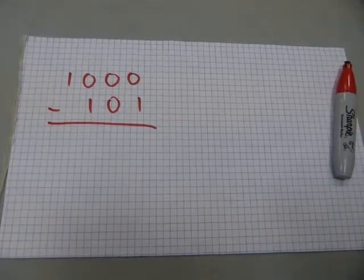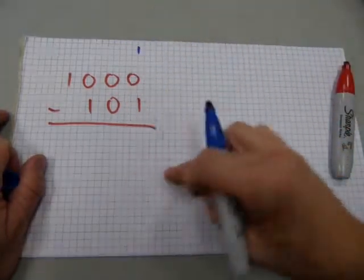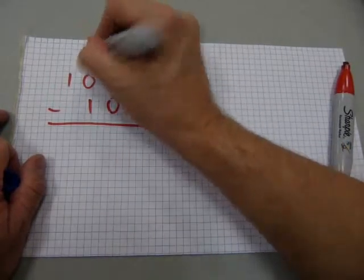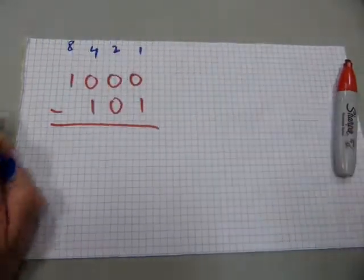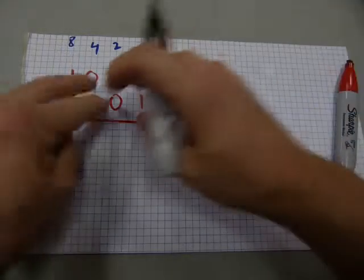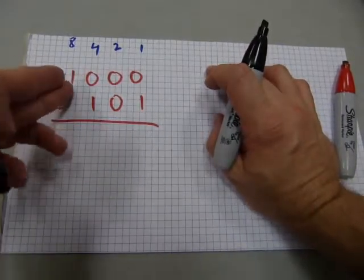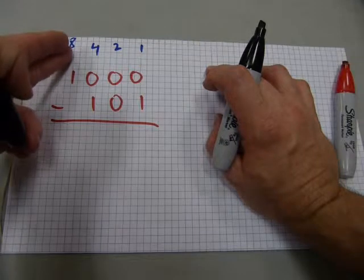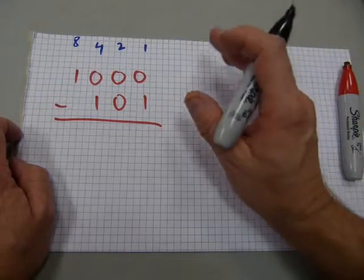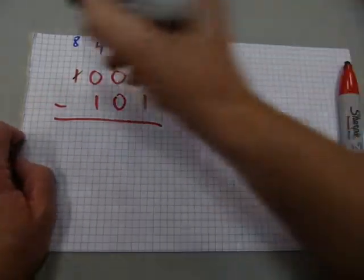Here's a visual reminder of the columns: this is the ones column, these are the twos, these are the fours, and those are the eights. The upper number 1000 is eight, because there is a one placed in the eights column and nothing else.